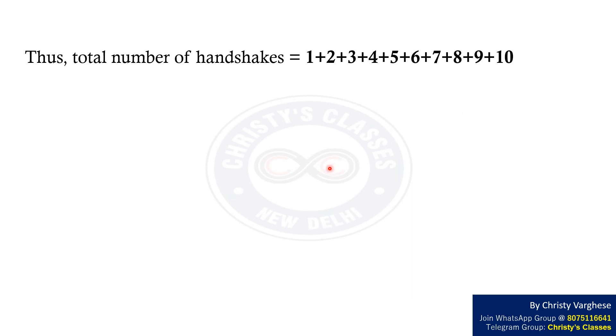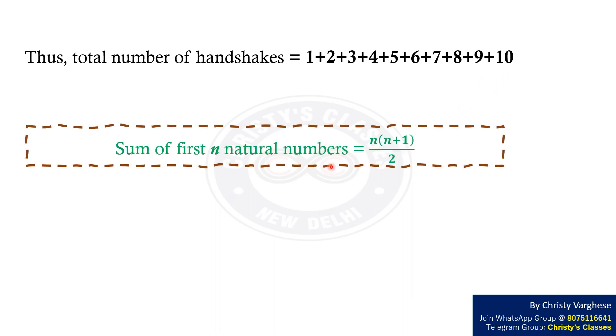We know that sum of first N natural numbers equals N into N plus 1 by 2. Thus, total number of handshakes equals 10 into 11 by 2 which equals 55.